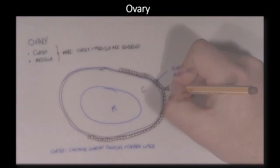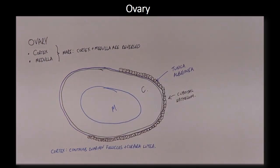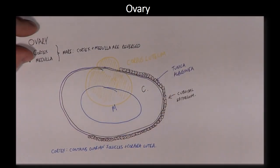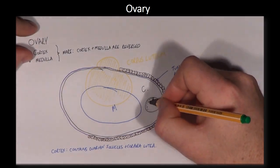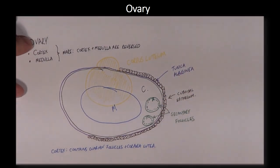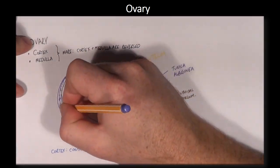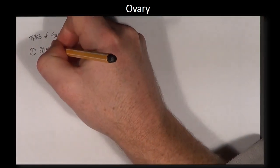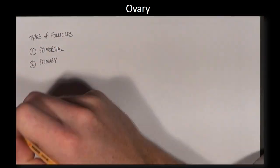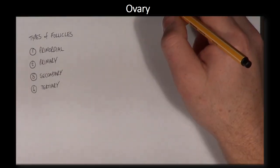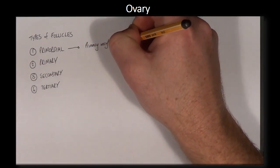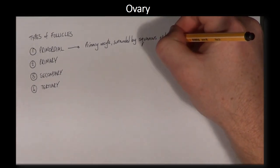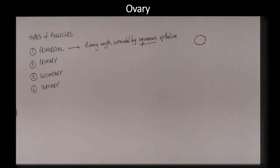An ovarian follicle is formed from the oocyte itself and a variety of cells, some of which are endocrinologically active. Female animals are born with a finite number of primordial follicles; very few will actually develop into oocytes that ovulate. The remainder will never develop at all, or if they do, they will degenerate in a process known as follicular atresia. Primordial follicles consist of a primary oocyte — which has not undergone meiosis II — surrounded by a simple squamous epithelium of follicular cells. In ruminants, primordial follicles are evenly distributed around the outer portion of the ovarian cortex, while in carnivores they occur in clusters.